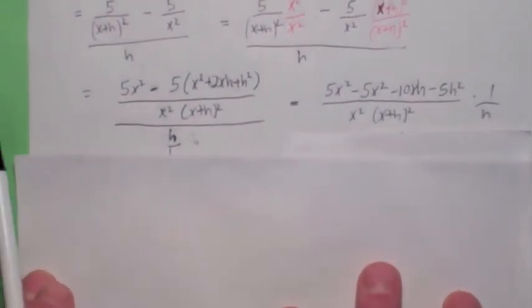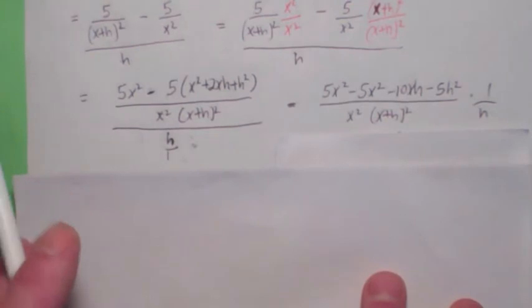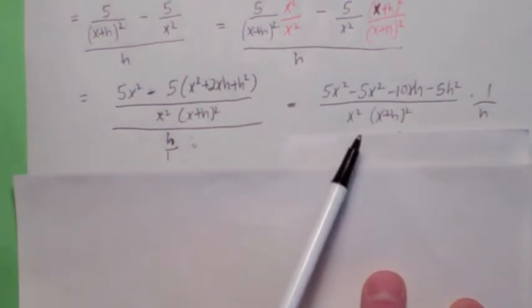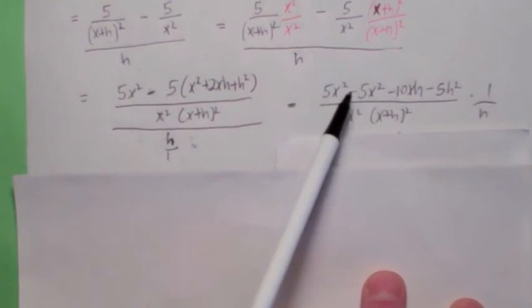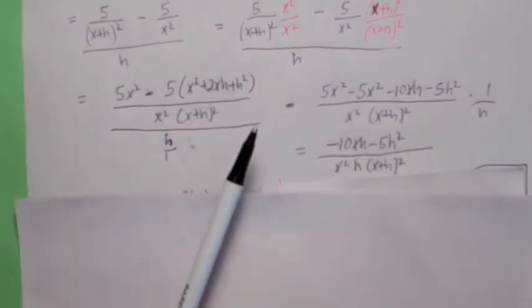Now, what should happen if you do these right? As we saw before, a lot of stuff should cancel. Everything that doesn't have an h in it should actually cancel. Notice the 5x squares cancel, and what you have left is this.